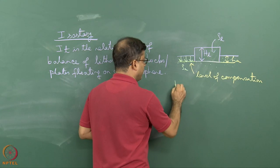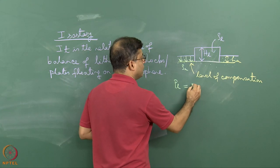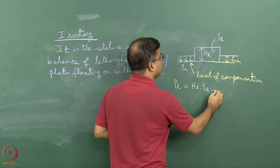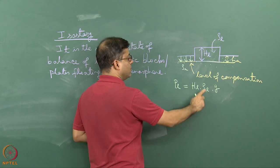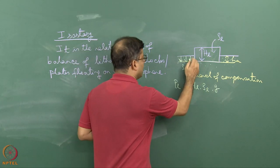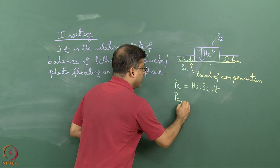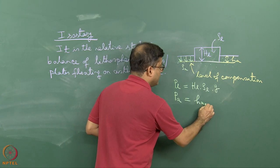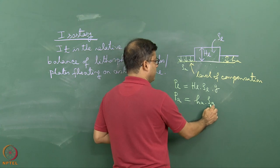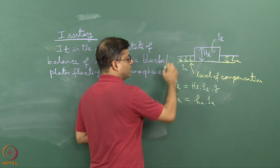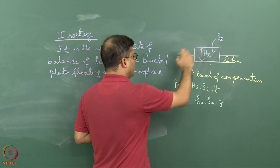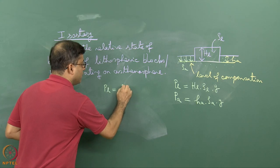The pressure exerted by the lithosphere is equal to H_L multiplied by rho_L multiplied by G, where H_L is the total length, rho_L is the density of the lithosphere, and G is the acceleration due to gravity. The pressure exerted by the asthenosphere is given by h_A multiplied by rho_A multiplied by G, where rho_A is the density of the asthenospheric material. Since it is in equilibrium, we can write P_L equal to P_A.